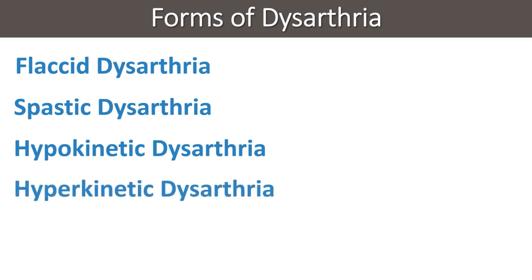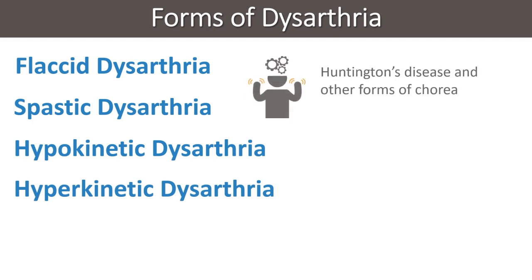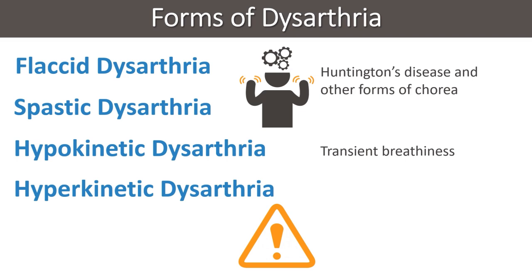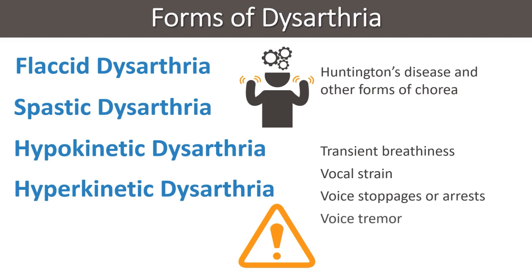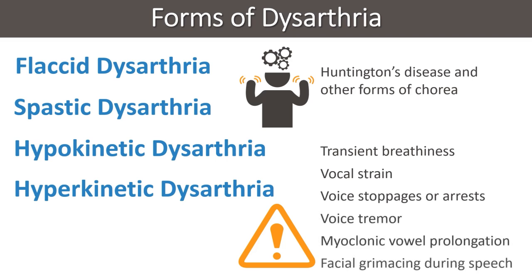Hyperkinetic dysarthria is commonly seen in patients with Huntington's disease and other forms of chorea. Patients present with transient breathiness, vocal strain, voice stoppages or arrest, voice tremor, myoclonic vowel prolongation, and facial grimacing during speech.